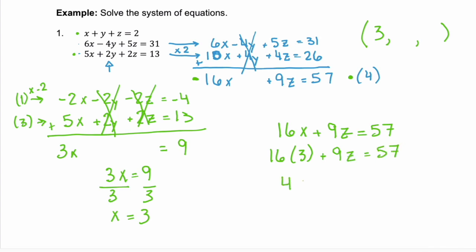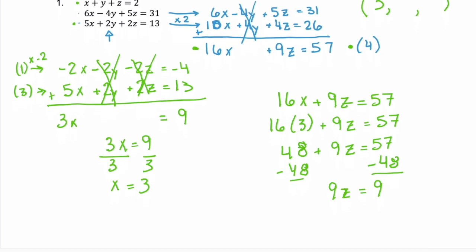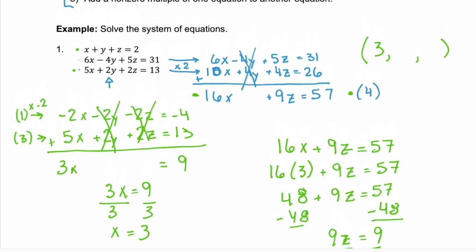Or 48 + 9z = 57. Subtract 48 from both sides. We have 9z = 9. Divide both sides by 9 and we get z = 1. So remember this is x, y, and z. So our z coordinate is 1.